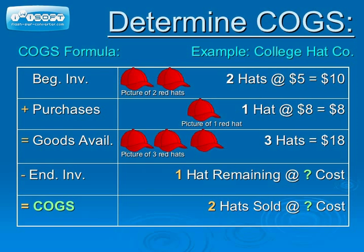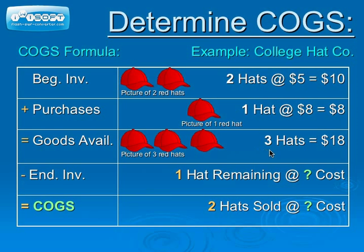Now we will apply a simple example to demonstrate this concept, noted on the right side of this slide. College Hat Company has a beginning inventory balance of two hats, which were purchased at the cost of $5 each. Therefore, the beginning inventory value is $10. During the month, College Hat Company purchased one additional hat, and the cost of this hat is $8. Therefore, we now have three hats, and the total cost of goods available for sale is $18.